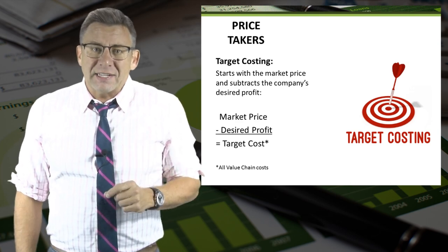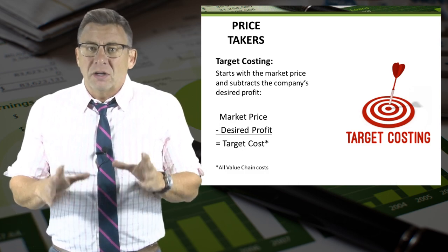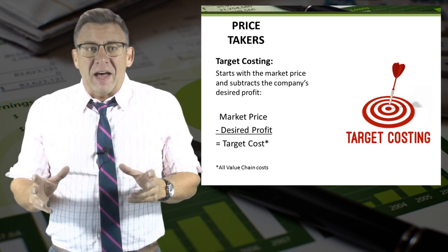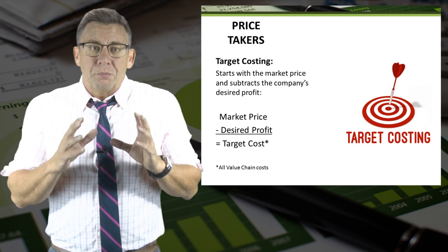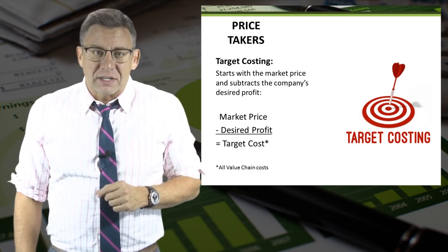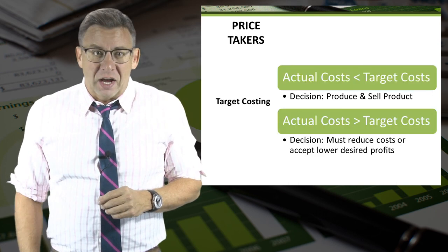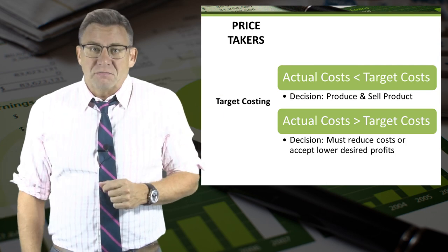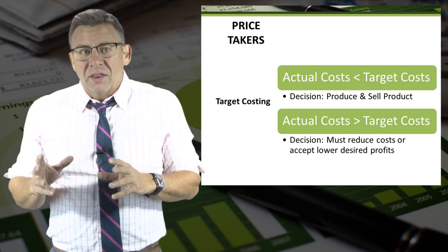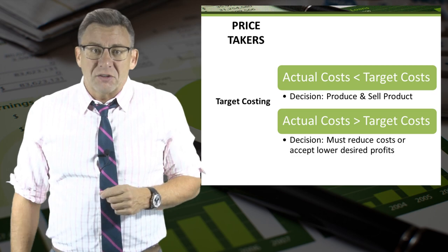Target costing is the difference between the market price and a reasonable desired profit. All of the costs incurred within the value chain to produce and sell a product are included in the target cost. When actual costs are less than target costs, a company can produce and sell the product. However, when actual costs are higher than target costs, a company must make some changes before selling its products.